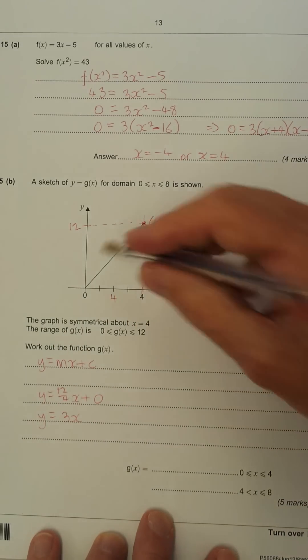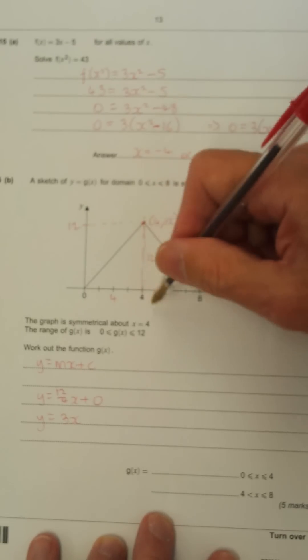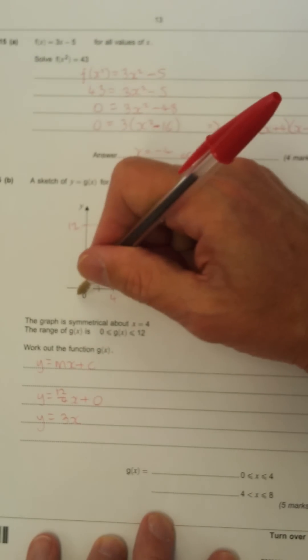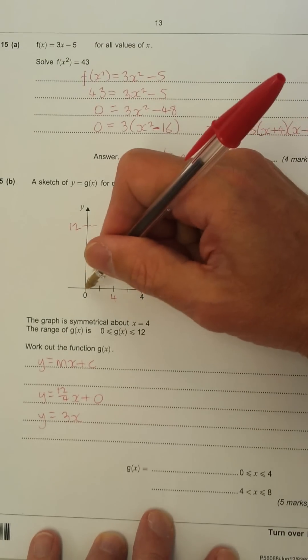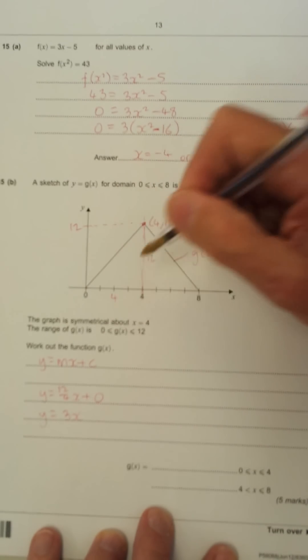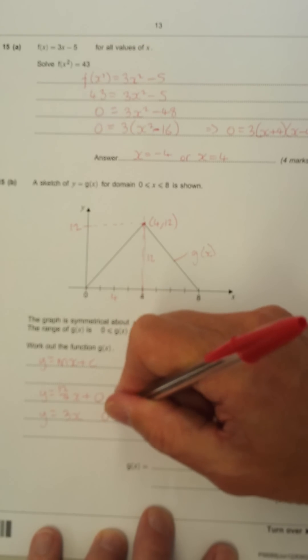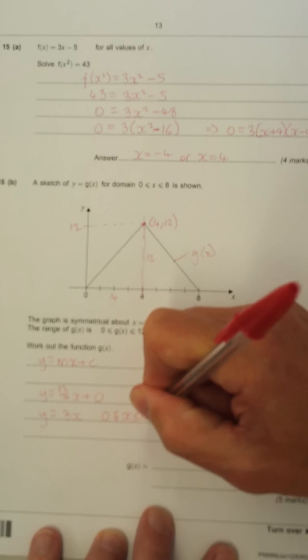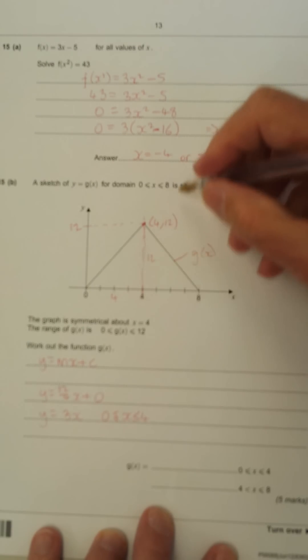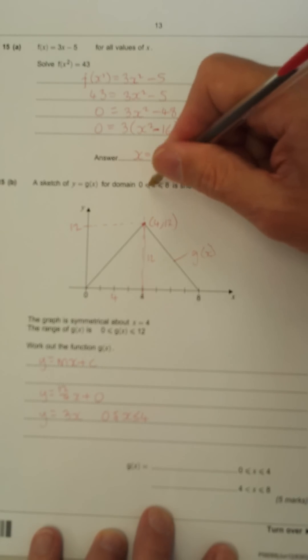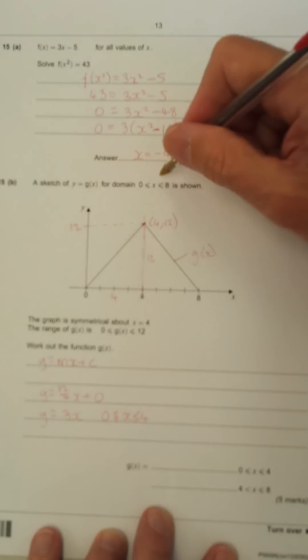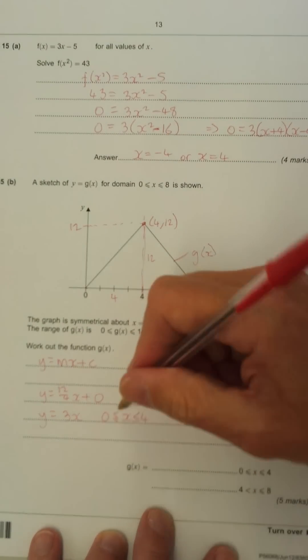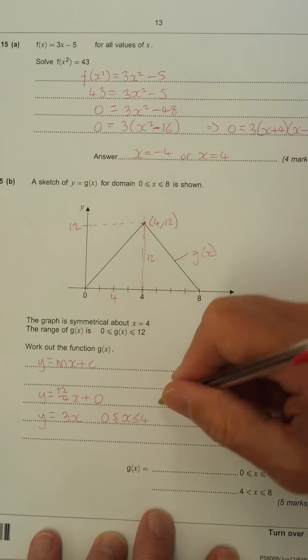Now, we need to give the domain of this part, because the domain is different for each part of the graph. For this part is different, this part. So this domain is 0 to 4. So we put 0 less than or equal to x less than or equal to 4. Notice, we've got the equals underneath, because we've got this domain is 0 to 8, and it's got the equals part there. So it includes the 4. So that part's done.